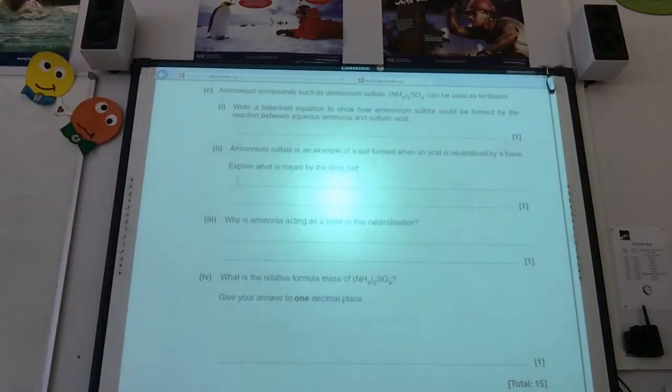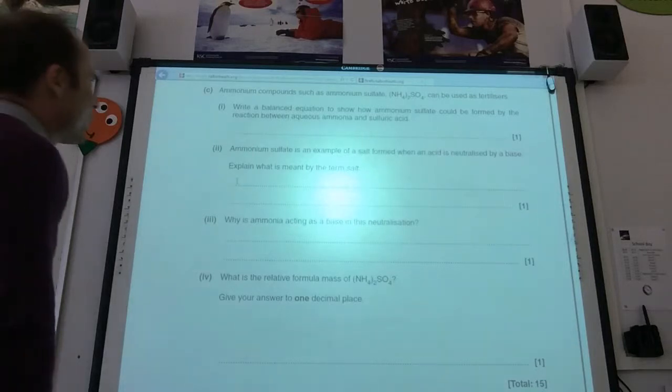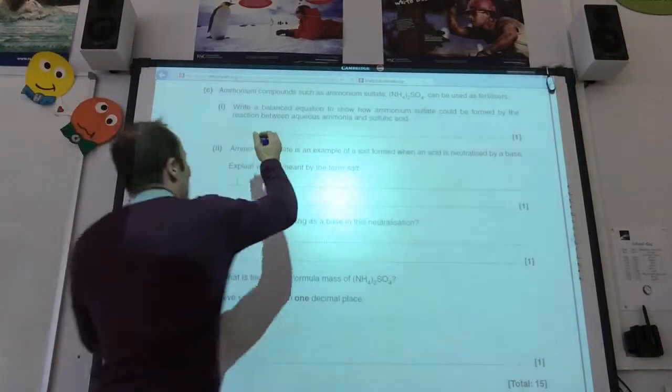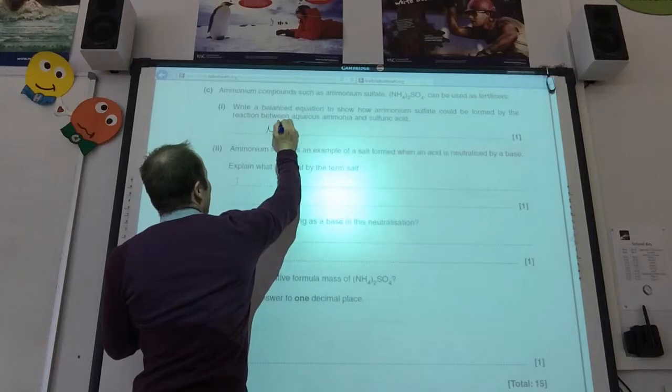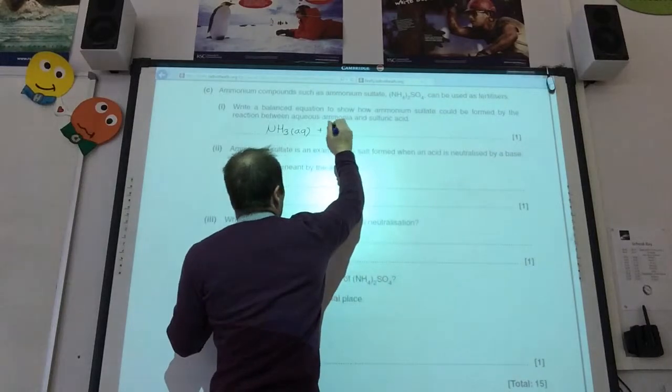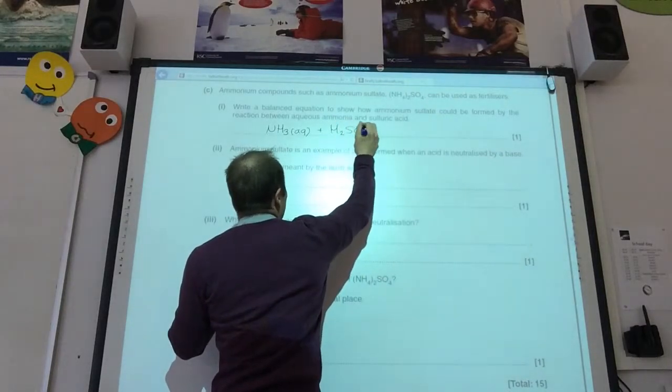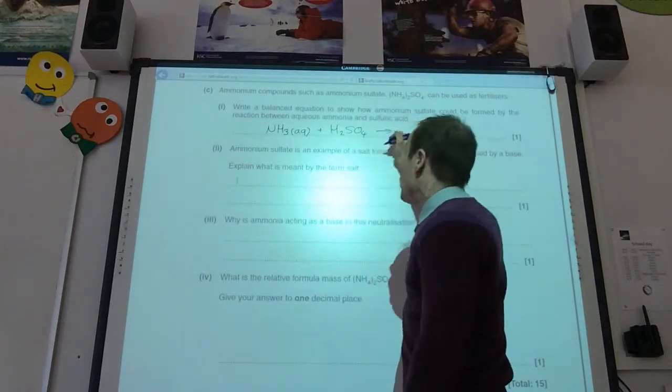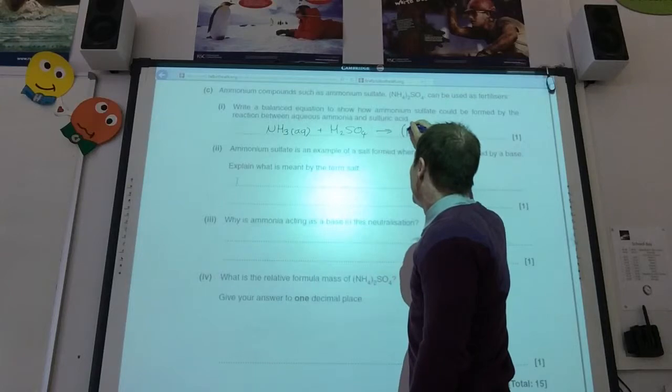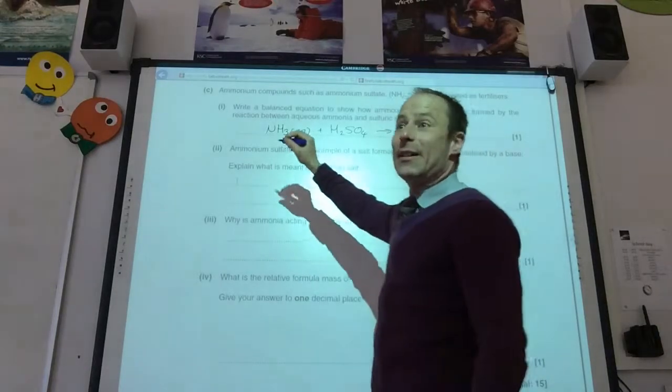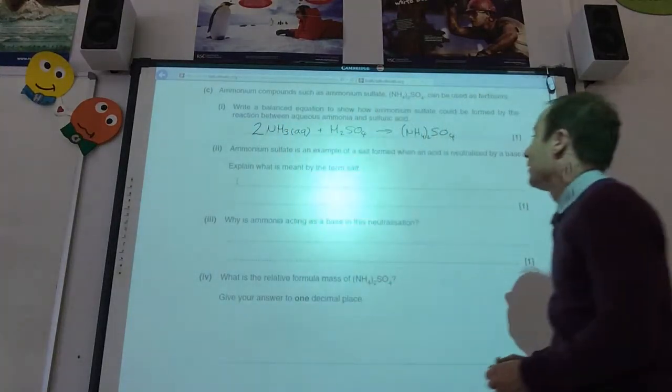Right. Ammonium compounds, such as ammonium sulfate, can be used as fertilizers. Right. A balanced equation to show how ammonium sulfate could be formed by aqueous ammonia and sulfuric acid. So, you've got aqueous ammonia. I think some people decide to use ammonium hydroxide. That's okay. Plus sulfuric acid. So, you need to know your formula for sulfuric acid. That's going to go to ammonium sulfate. What's going to be... Oh, they told me what ammonium sulfate is. That's easy. And I need to balance it by just having two of those guys. Like so.